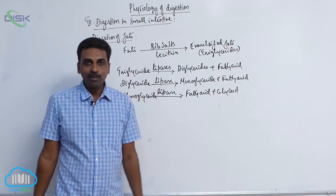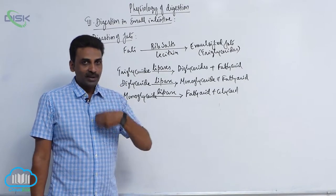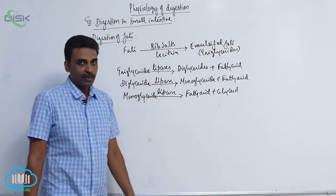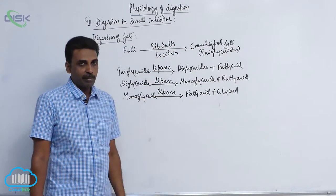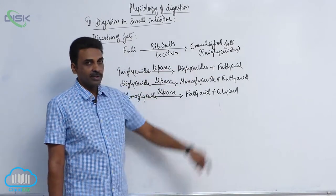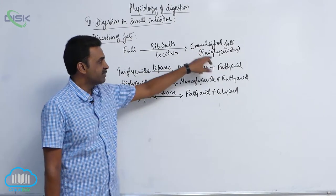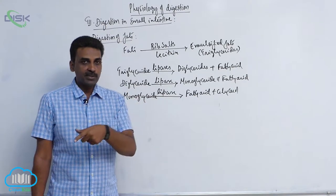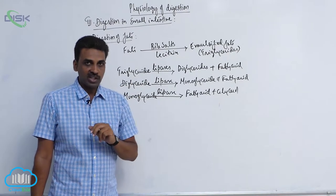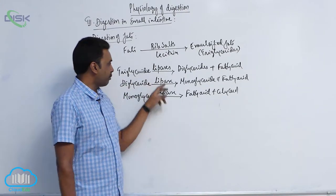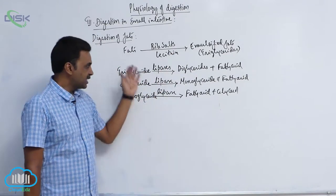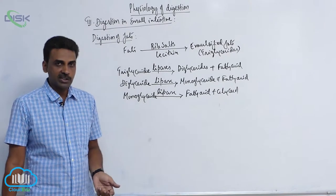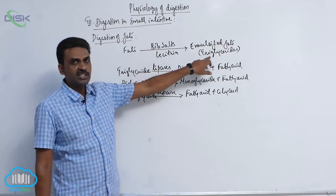So digestion of fats is quite simple. The larger fat droplets in our diet are first converted into smaller fat droplets — that process is called emulsification, aided by bile salts and lecithin. The emulsified fats contain triglycerides, which are acted upon by two lipases: pancreatic lipase (steapsin) and intestinal lipase. Together they sequentially break down triglycerides into diglycerides, monoglycerides, and finally fatty acids and glycerol.